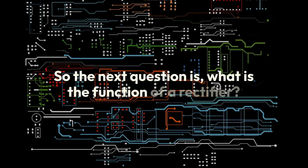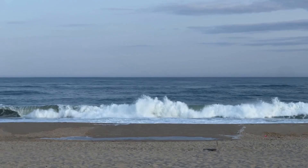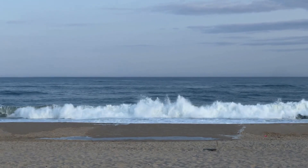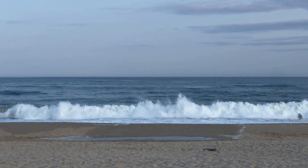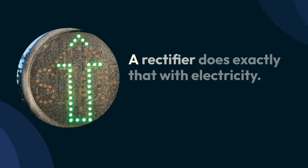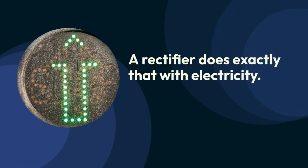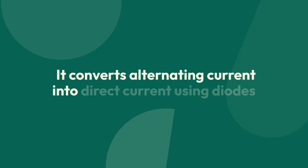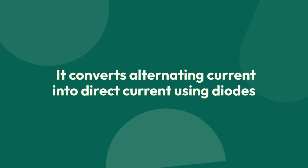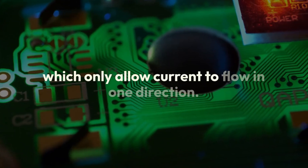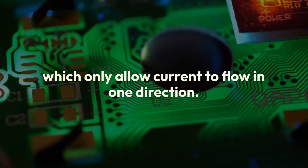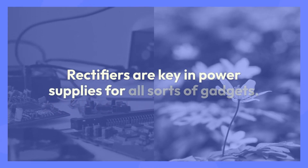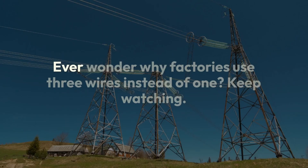Next question: what is the function of a rectifier? Imagine you have a wave of water coming at you but you only want the wave coming toward you. A rectifier does exactly that with electricity — it converts alternating current into direct current using diodes, which only allow current to flow in one direction. Rectifiers are key in power supplies for all sorts of gadgets.